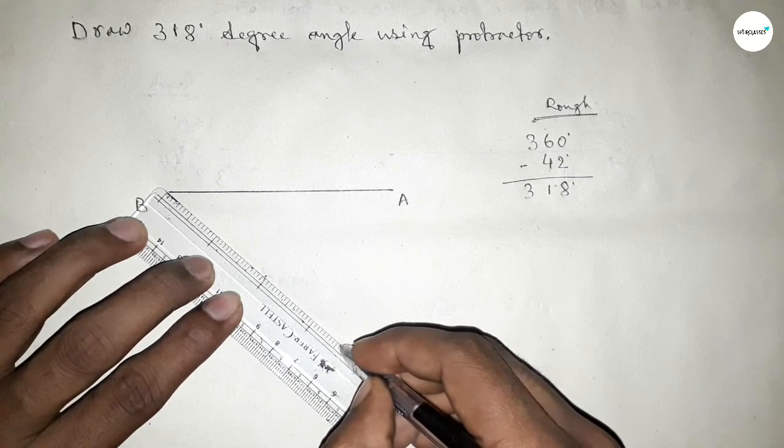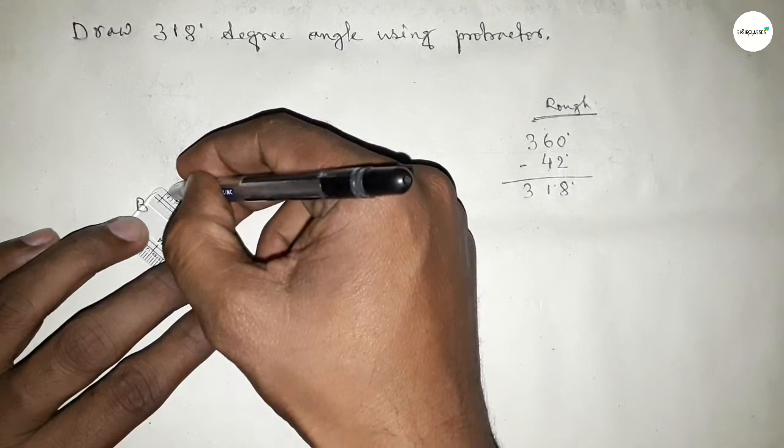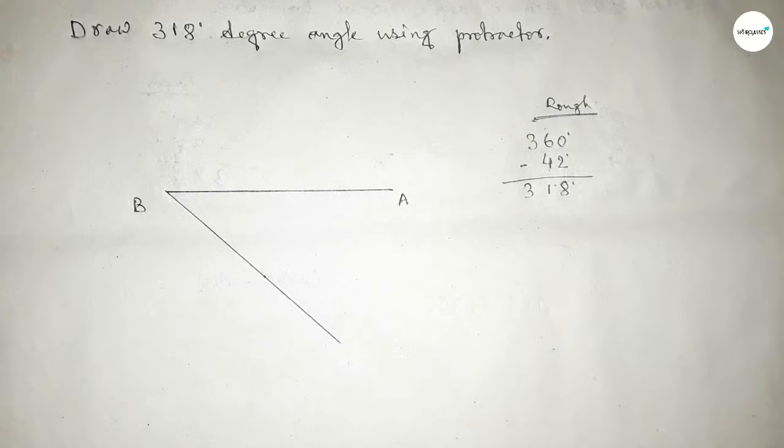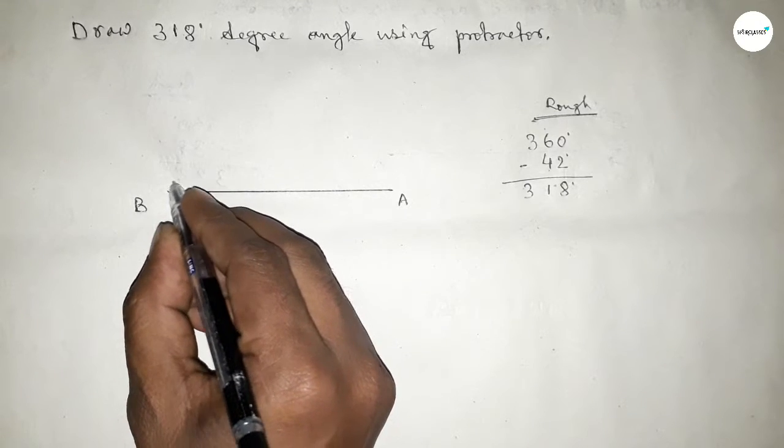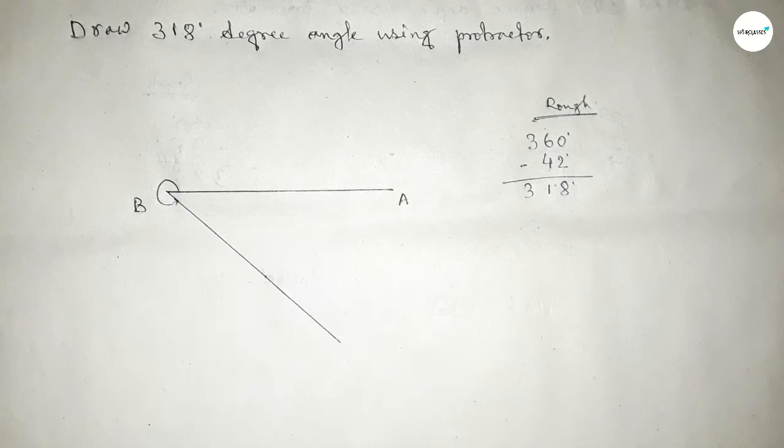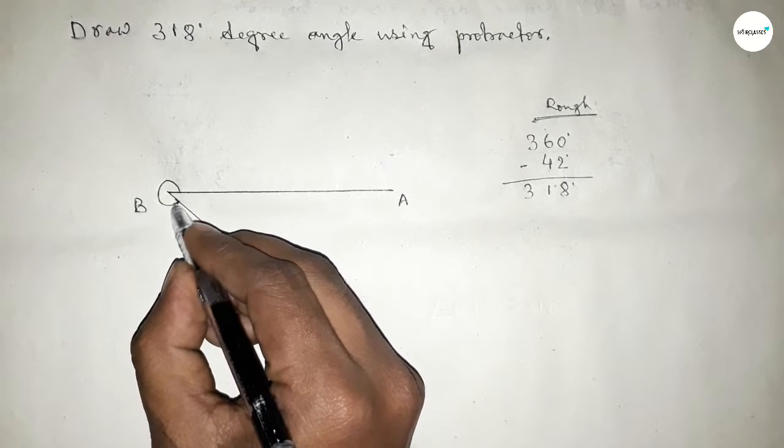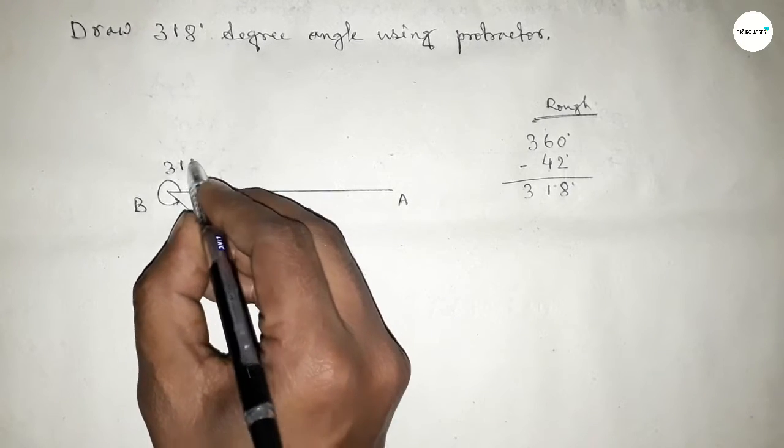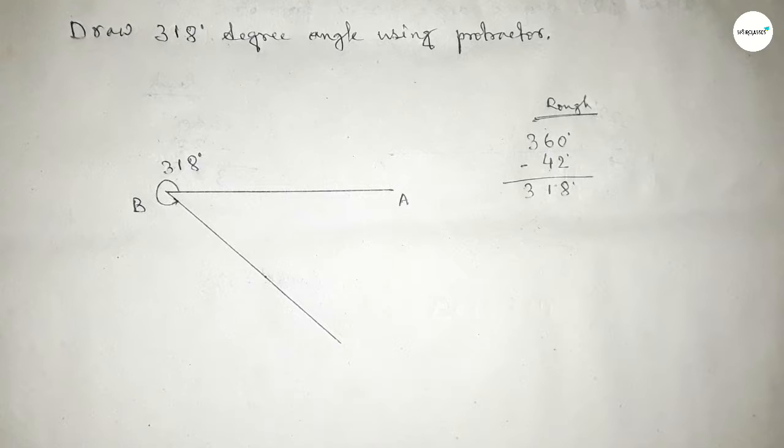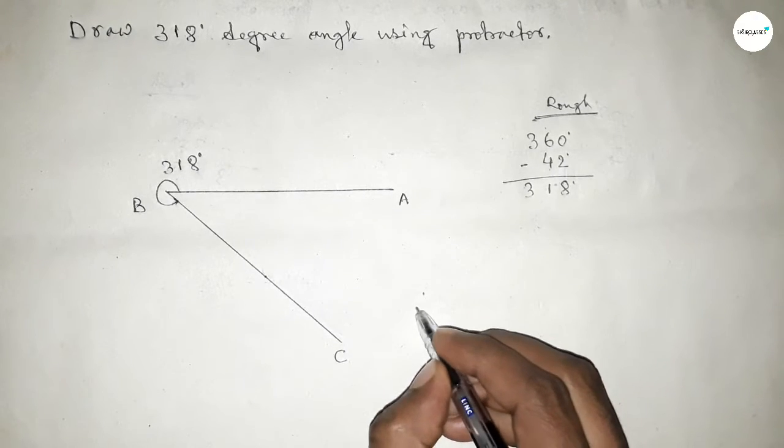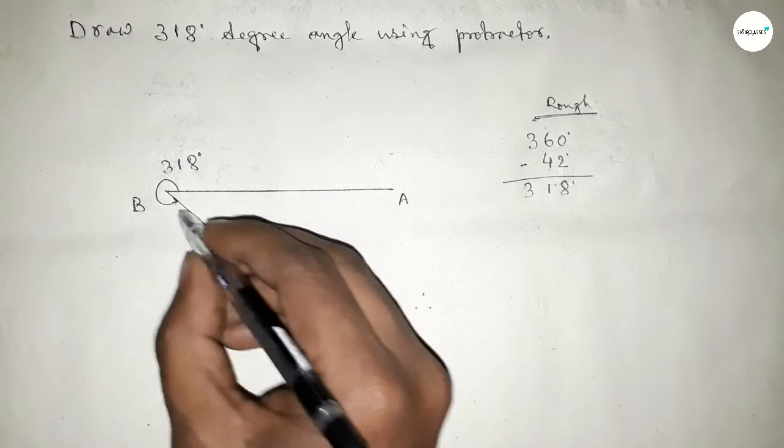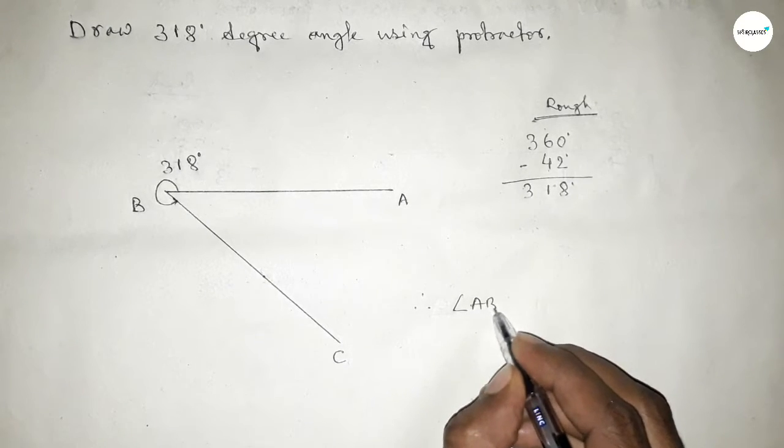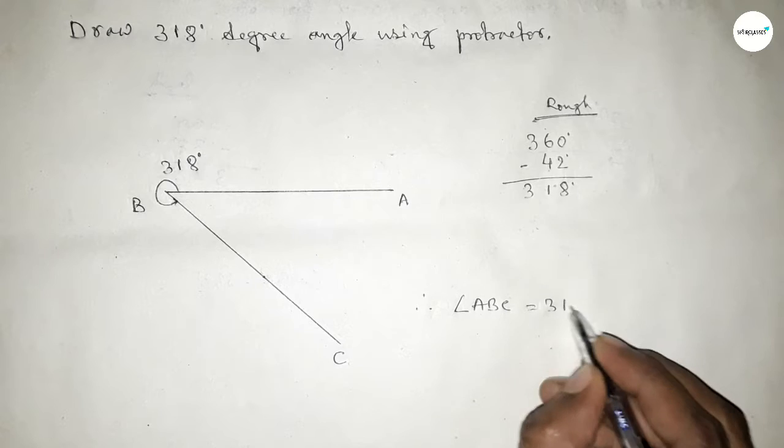So now joining this side and joining this side, and this is up to this 318 degree. So this is 318 degree angle and here is point C. So angle ABC up to this, so angle ABC equal to 318 degree angle.